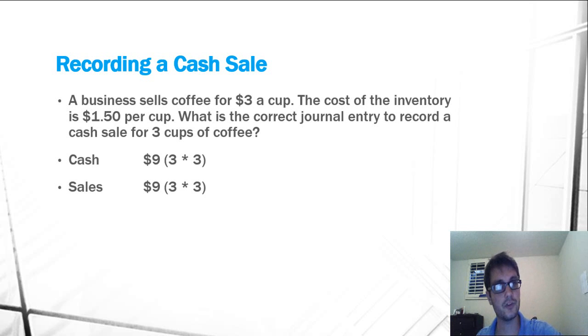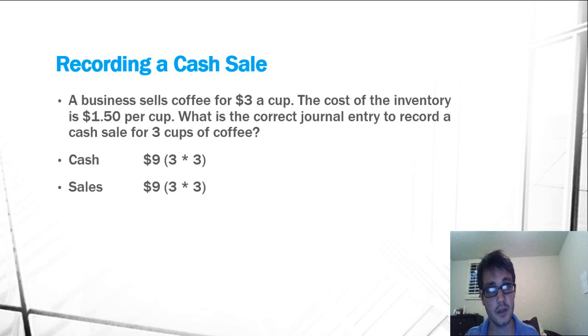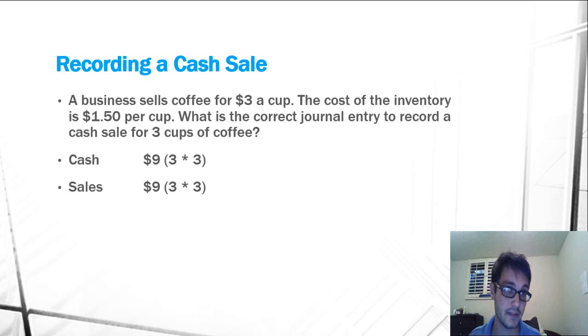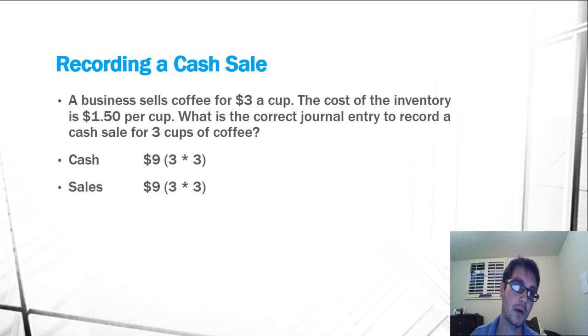So let me read the question. A business sells coffee for $3 a cup. The cost of the inventory is $1.50 per cup. What is the correct journal entry to record a cash sale for three cups of coffee?